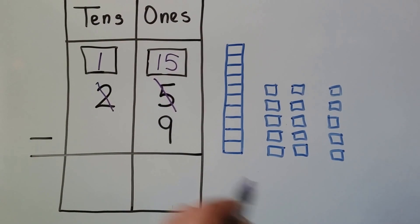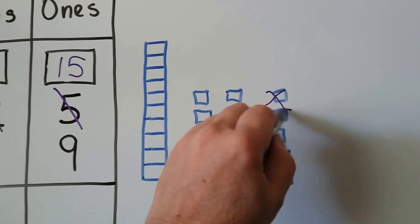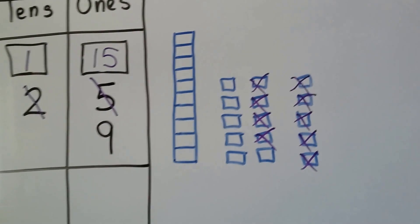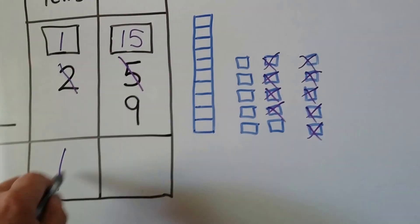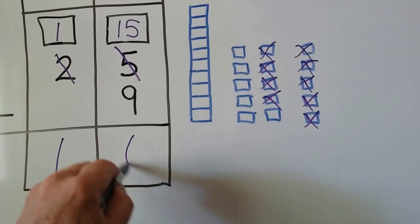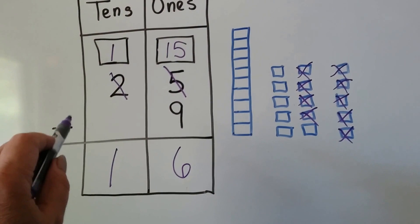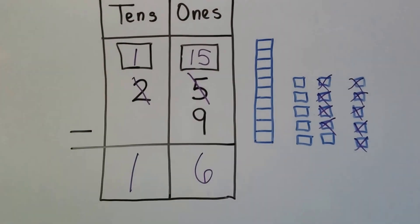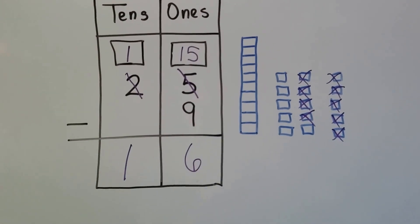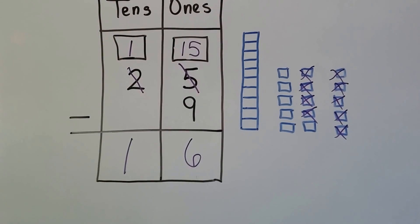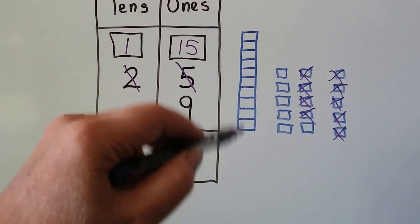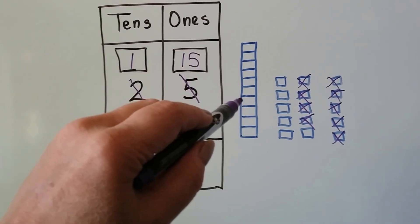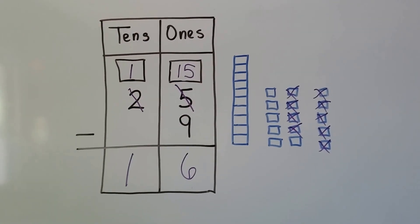Now we have fifteen ones, not five. We take the nine away — one, two, three, four, five, six, seven, eight, nine. That's going to leave us with one ten and six ones. Fifteen minus nine is six, and we drop the one down. So you can use the pictures — just cross out the ones that you're subtracting. Even if the picture is of a ten long, you can cross off little ones from it. Just remember that now it's not a full ten anymore because you took some of it away.